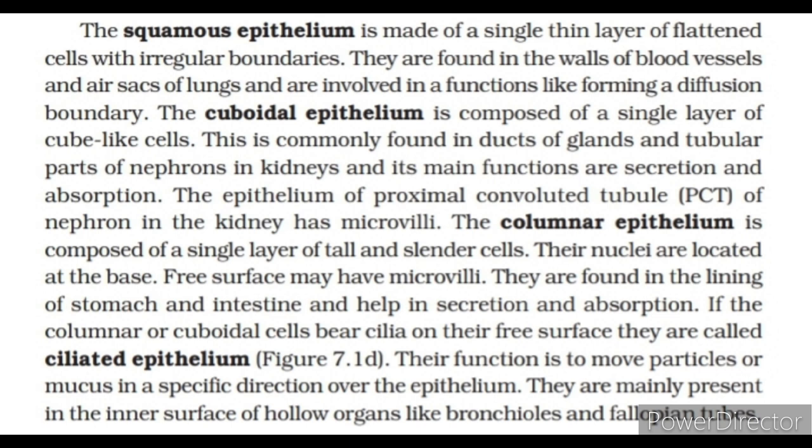The cuboidal epithelium is composed of a single layer of cube-like cells, commonly found in ducts of glands and tubular parts of nephrons in kidneys; its main functions are secretion and absorption. The epithelium of proximal convoluted tubule (PCT) of nephron in the kidney has microvilli. The columnar epithelium is composed of a single layer of tall and slender cells with nuclei located at the base; their free surface may have microvilli. They are found in the lining of stomach and intestine and help in secretion and absorption. If columnar or cuboidal cells bear cilia on their free surface, they are called ciliated epithelium, and their function is to move particles or mucus in a specific direction over the epithelium.